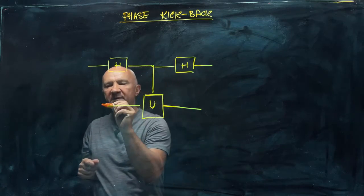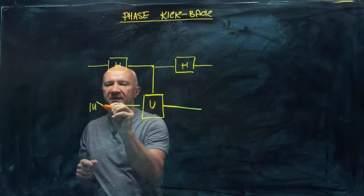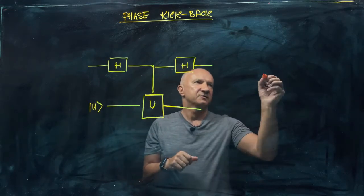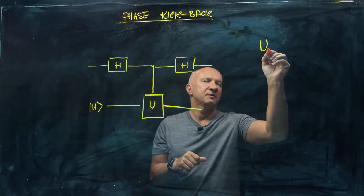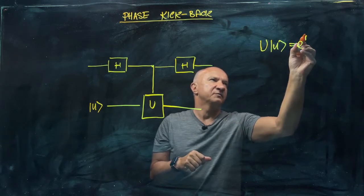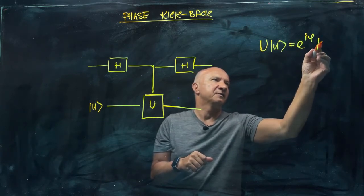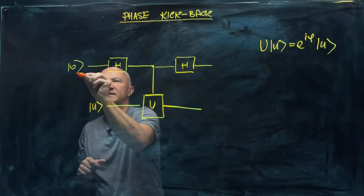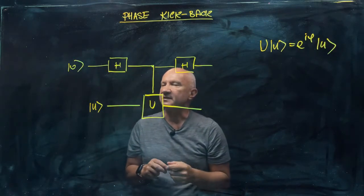Now suppose that you prepare the second qubit in some state U, which is an eigenstate of this unitary operation. So that U, unitary U acting on state U gives you some phase factor e to the i phi and the state U. And here you start the first qubit in state zero.